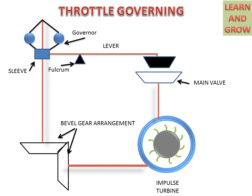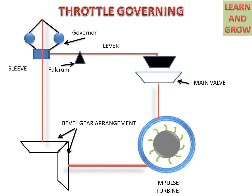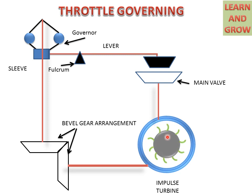Now we see the working of the Throttle Governing process and how it will work for maintaining the flow of water. When water comes from the main valve and strikes on the buckets of the impulse turbine, the turbine starts rotating. If the load is less, the rotor will gain high speed. For maintaining the flow of water coming from the main valve, this gear arrangement will work.